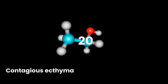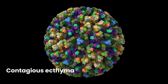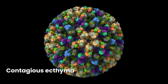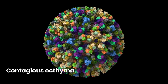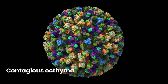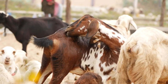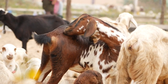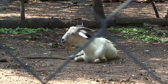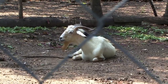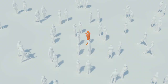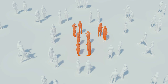Number twenty: contagious ecthyma. Contagious ecthyma, or ORF, is a viral skin disease in goats and sheep caused by the ORF virus. It leads to pustular lesions on the lips, oral cavity, and udder, causing discomfort and loss of appetite in animals. Furthermore, ORF virus infections in humans can occur through contact with infected animals or contaminated surfaces.